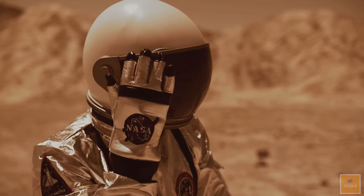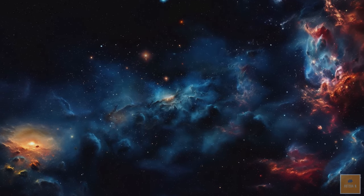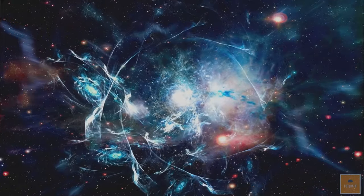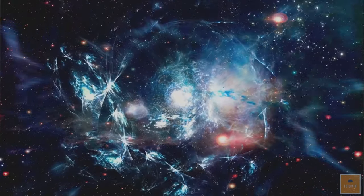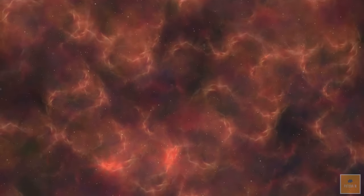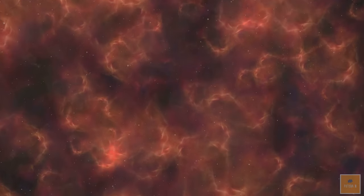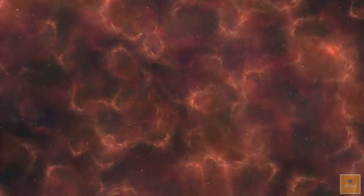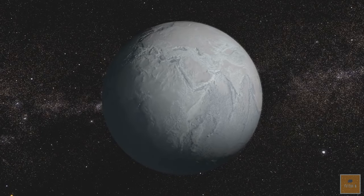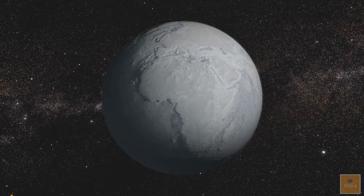First up, we have the big freeze. Imagine the universe expanding forever. As it does, galaxies drift apart, stars burn out, and everything moves further and further away from each other. Over trillions of years, the universe cools down and reaches a state of absolute zero, where everything is too cold to sustain any form of life or energy. It's like a cosmic freezer, slowing everything to a halt.